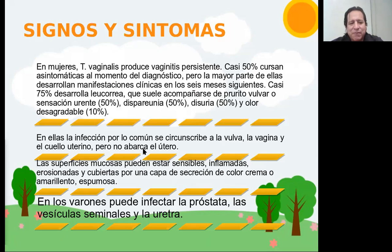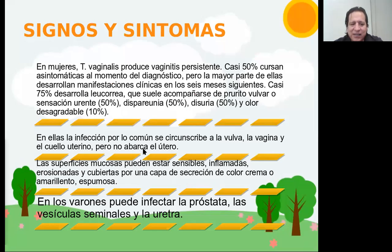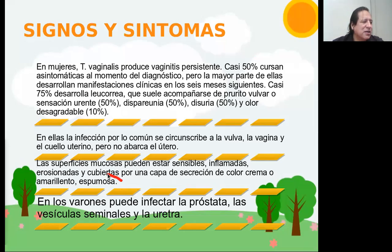Ahora, obviamente por la inflamación, tanto las mucosas de la vagina como la vulva van a estar ligeramente inflamadas — significa estar rojas, ligeramente edematosas. Pudieran estar erosionadas, como si estuviesen rajaditas, como decimos comúnmente. Y puede estar la secreción que les mencioné, que puede ir de blanca a amarillenta — comúnmente le decimos cremosa y espumosa.